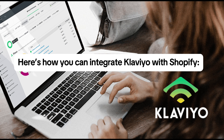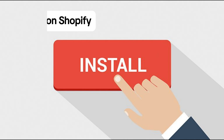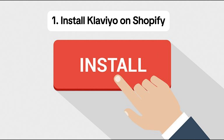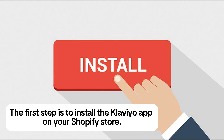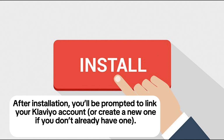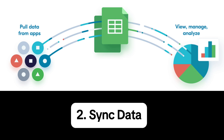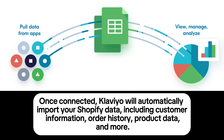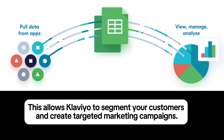Here's how you can integrate Klaviyo with Shopify. Step 1: Install Klaviyo on Shopify. The first step is to install the Klaviyo app on your Shopify store. After installation, you'll be prompted to link your Klaviyo account or create a new one if you don't already have one. Step 2: Sync data. Once connected, Klaviyo will automatically import your Shopify data, including customer information, order history, product data, and more.